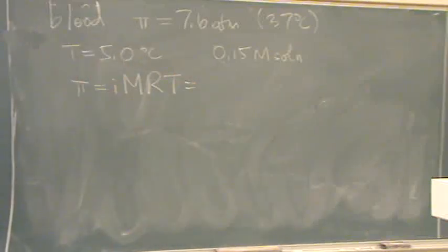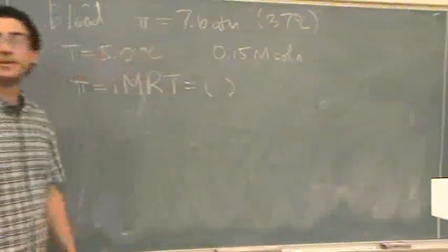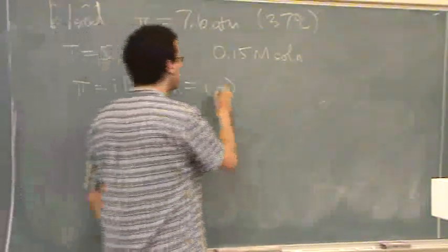π equals iMRT. What's i for blood, do you think? One. One, how did you know that? Yeah, it's organic.